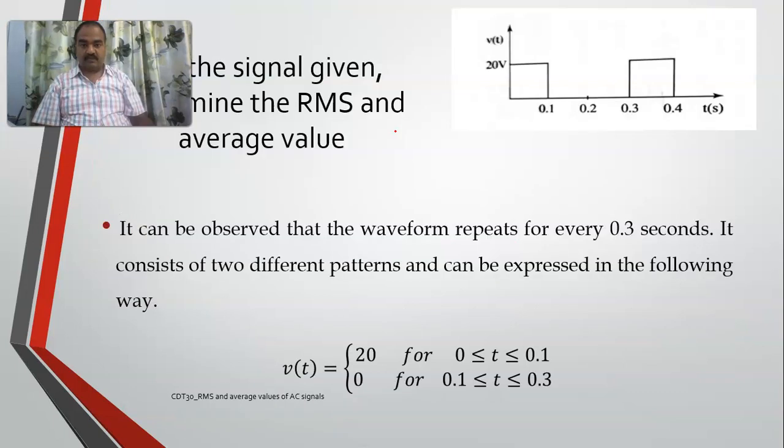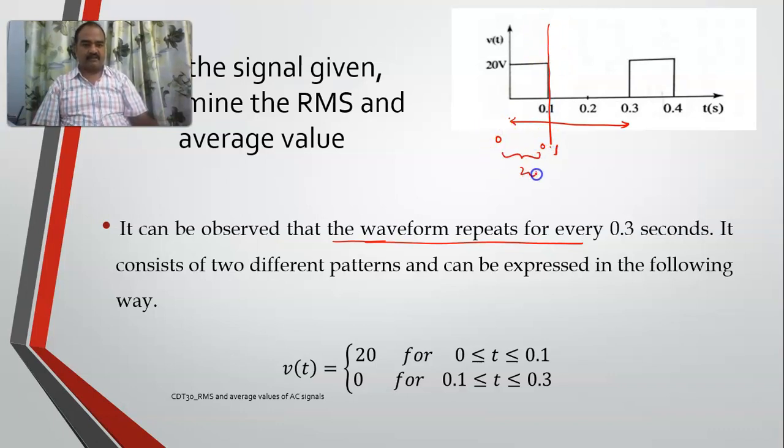So now, when I write the mathematical expression for this one, it can be observed that the waveform repeats for every 0.3 seconds and it consists of two different patterns. One from 0 to 0.1, its value is 20 and from 0.1 to 0.3, it is constant at 0. This is what I have written here, two patterns: 20 from 0 to 0.1 and 0 from 0.1 to 0.3.